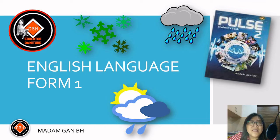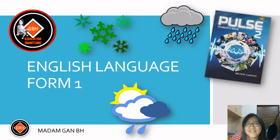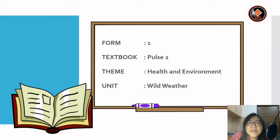Hi, welcome to an English language lesson. This lesson is for Form 1. The textbook we are using is Pulse 2. The theme is Health and Environment. The unit is Unit 4, Wild Weather.